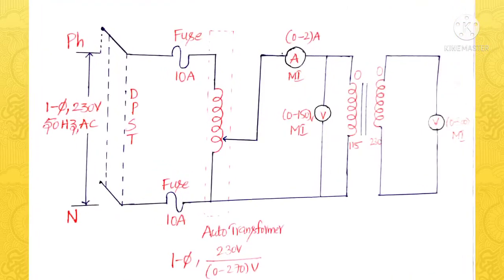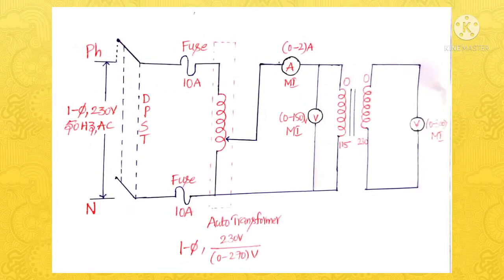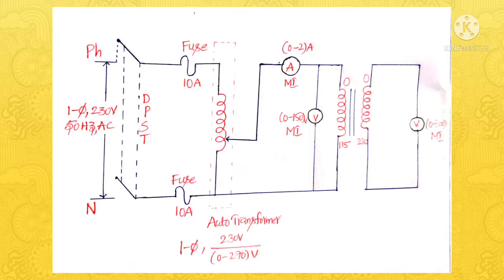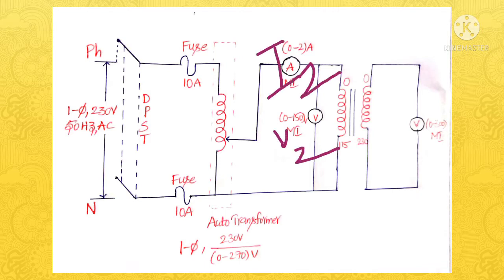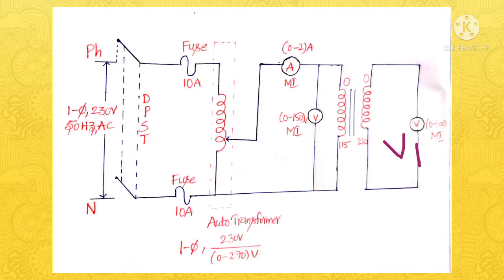In the second step, we will connect the circuit differently — there is an interchange in the connections. Previously, we gave the connections at the 230V side; now we are giving the connections at the 115V side. Keeping the autotransformer in the minimum position, we will close the DPST switch and then vary the autotransformer in order to measure different voltages and currents. As the 115V side is now considered as the secondary, the voltage across the 115V side is V2 and the current flowing through that side is I2, while the voltmeter connected across the 230V side measures V1.